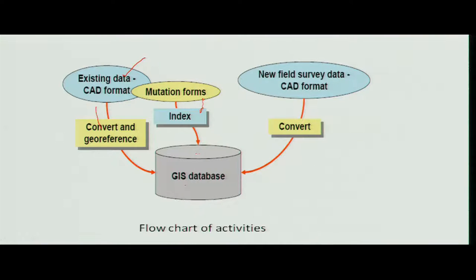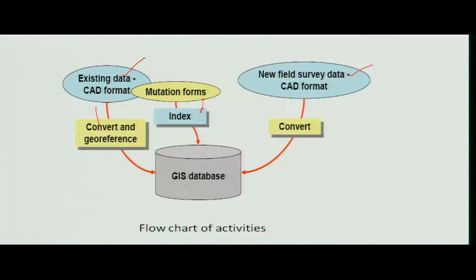This is the normal GIS with spatial data and attribute data. When you want correction or accuracy improvement, we use new field survey methods — perhaps total stations with GPS. These instruments can be directly connected to the GIS database.